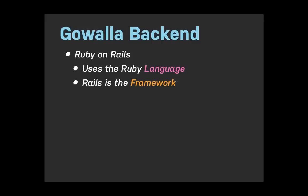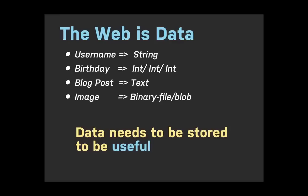The back end of Gowalla — the web app, iPhone app, and Android app — all use the exact same back end. To accomplish that, we use Ruby on Rails, where Ruby is a programming language and Rails is a framework. I understand you've been working with PHP, which is similar in nature to Ruby. Rails would be more like if you were using CakePHP — some sort of a framework.